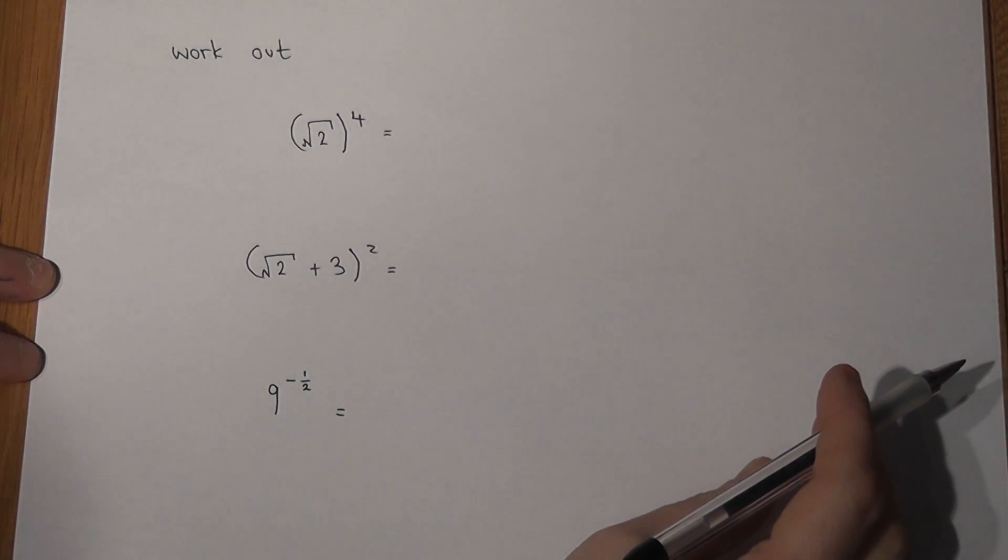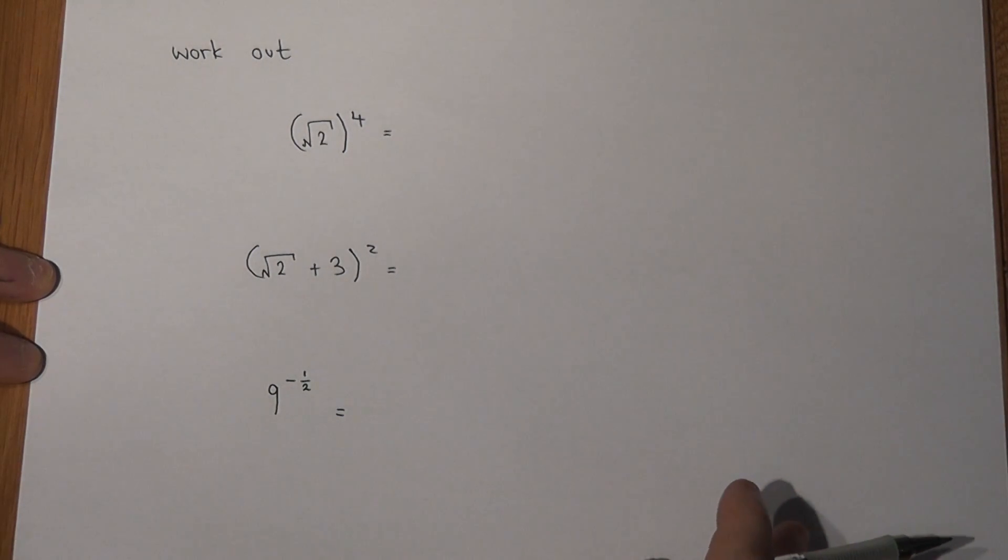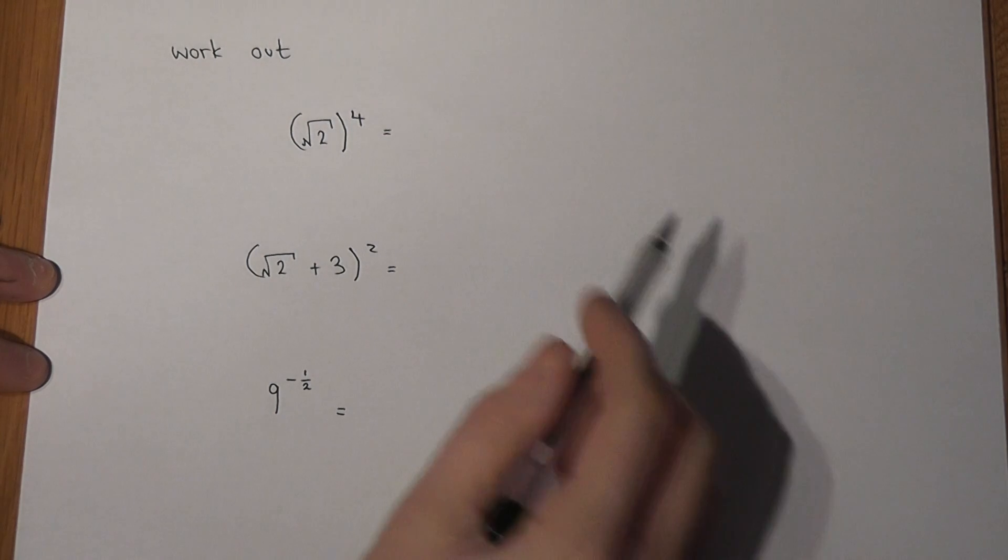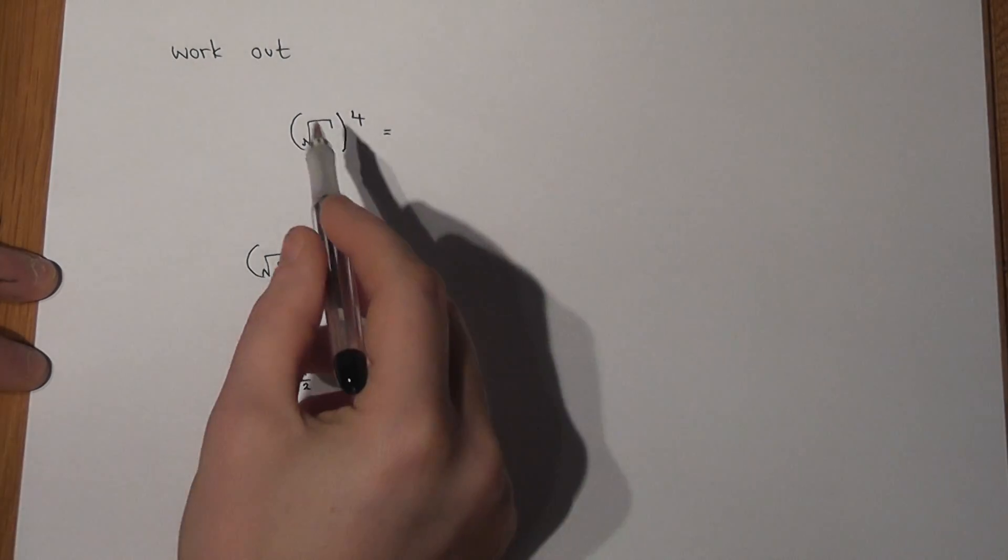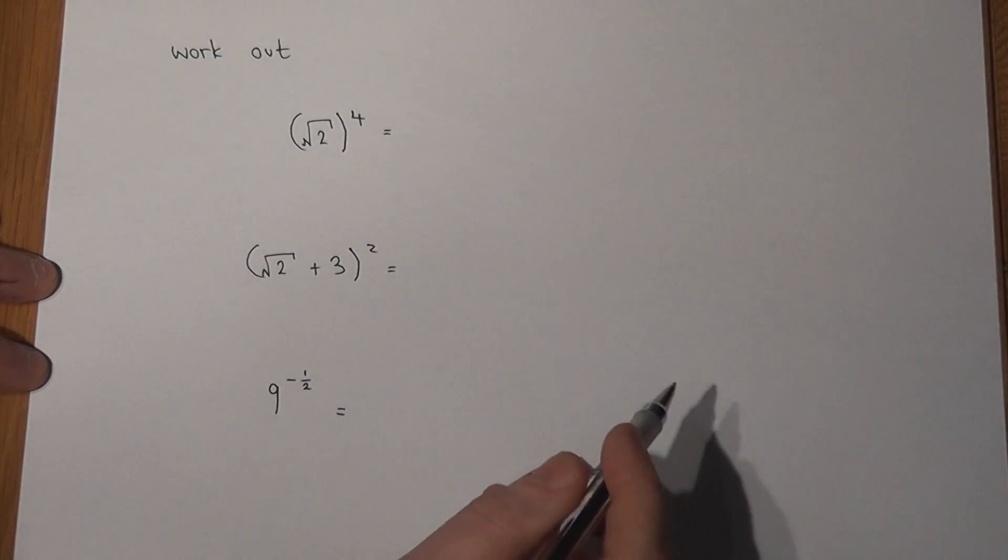In this question, we review some key surd and power rules without a calculator. In the first question, we've got square root of 2 all to the power of 4.